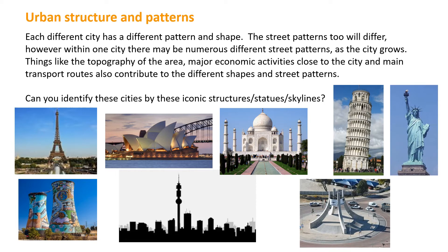Can you identify these cities from these iconic structures? The first one is the Eiffel Tower in Paris. Next up, we have got the Opera House in Sydney, Australia. Then we've got the Taj Mahal, that's in India in a city called Agra. Then this building here is the Leaning Tower of Pisa in Italy.